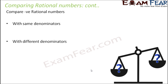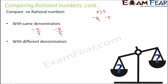Now let's see how to compare negative rational numbers. With the same denominator scenario — say minus 5 by 9 and minus 8 by 9 — which one is bigger and which is smaller? When you compare 8 with 5, you'd say 8 is bigger. So should minus 8 also be greater than minus 5? No — it is just the opposite. Minus 8 is less than minus 5. Can you tell me why?